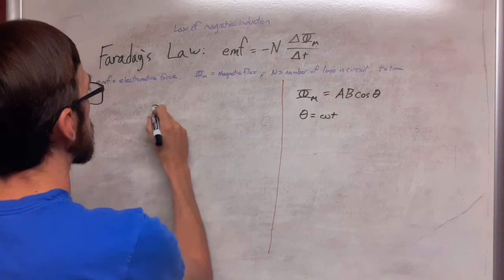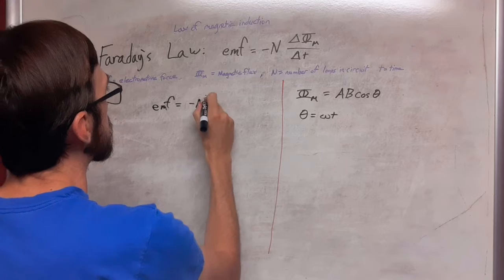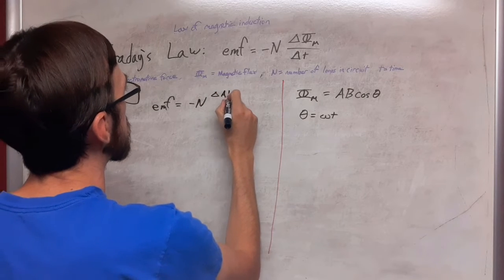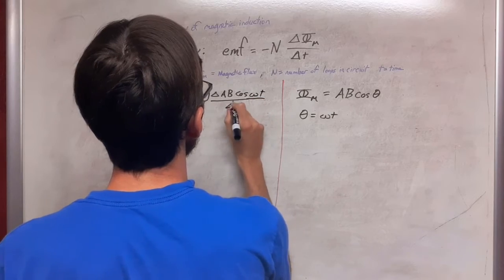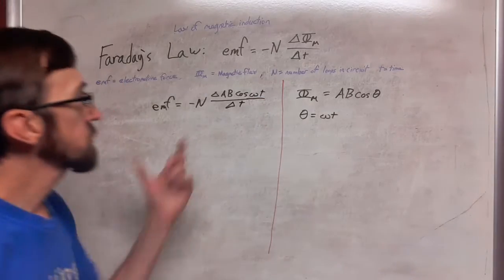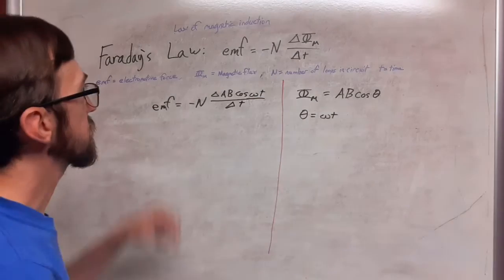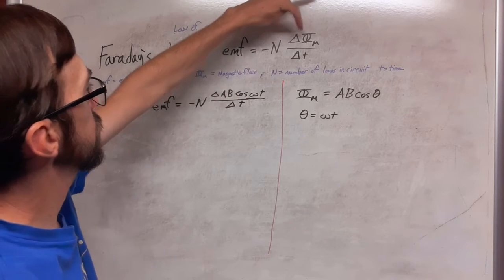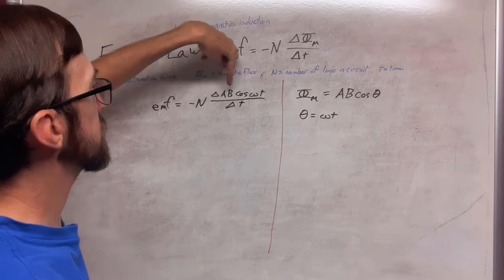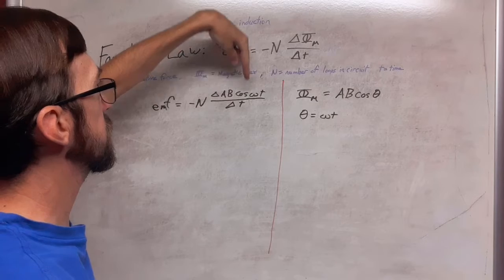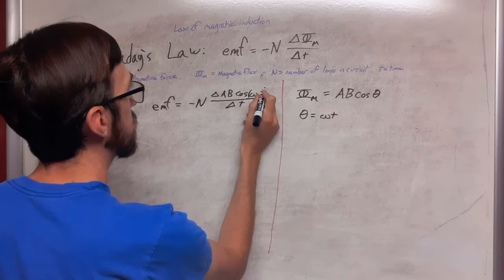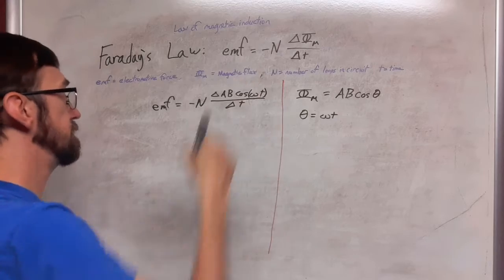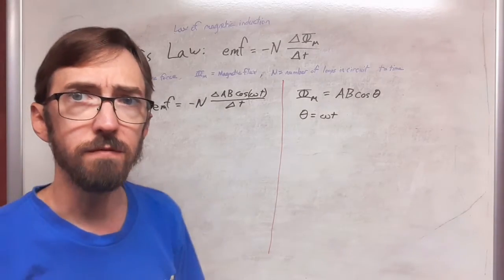So a rewrite looks like this. We've substituted in for the change of magnetic flux AB times cosine, and for theta omega times t. So this is all a part of the input for the cosine function.